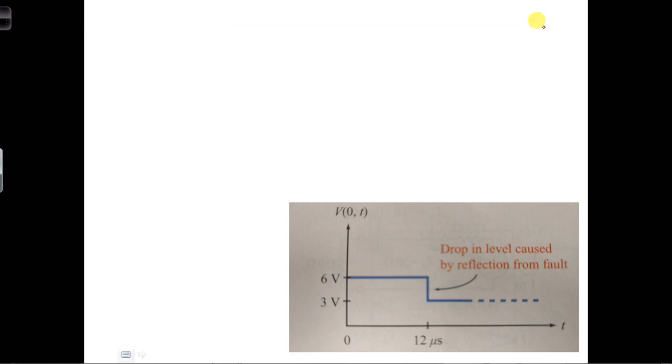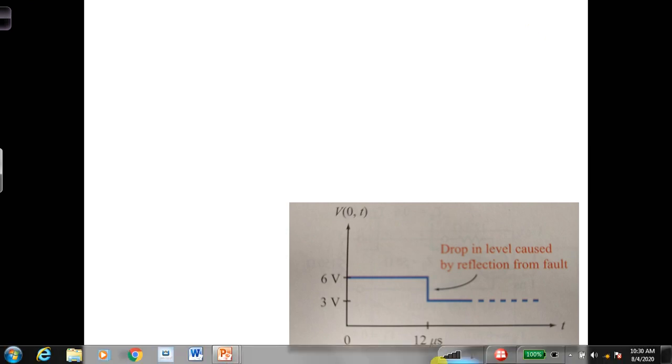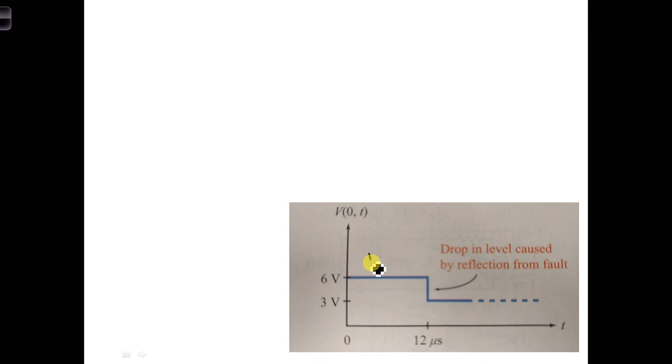What we're looking for here is the value of R sub F. From the plot, the voltage level from 0 to 12 microseconds is just V1+. After 12 microseconds, the voltage level here is going to be V1+, plus the reflection from the fault.